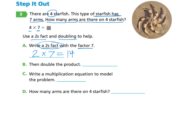Question B tells us to double the product. In multiplication, two and seven are the factors and 14 is the product — the answer. So we are going to double the product by writing 14 + 14, and when we double that product we find the answer is 28.